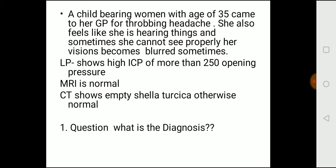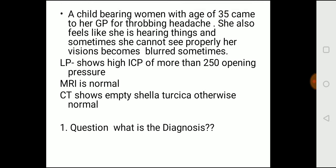Example question: a child-bearing woman, age 35, came to GP with throbbing headache. She hears things — tinnitus — and sometimes cannot see properly — visual obscuration. Headache plus visual obscuration plus tinnitus in an obese pregnant woman all link to pseudotumor cerebri. LP shows high ICP more than 250, and MRI is normal — both directly pointing to pseudotumor cerebri.